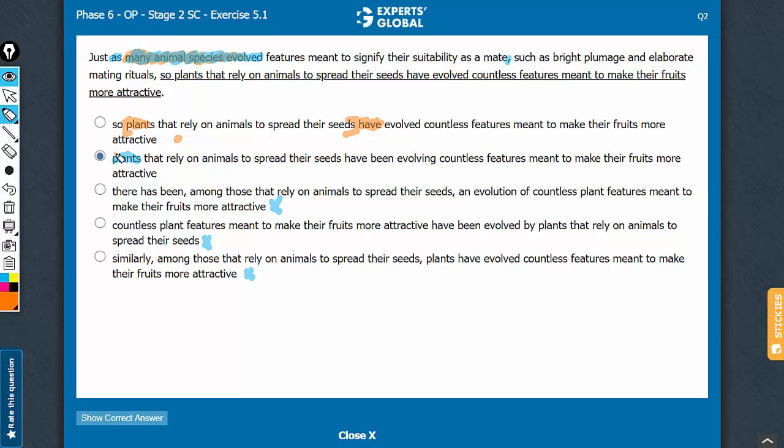In choice B, here also, from here to here, this is a noun phrase. The noun is plants. So just as many animal species evolved, plants have been evolving. So we need to understand that which tense is going to be better here, the present perfect tense or present perfect continuous tense.